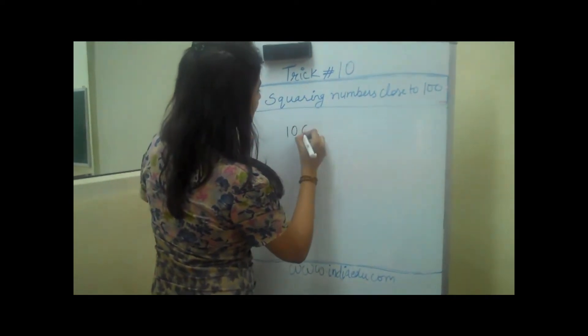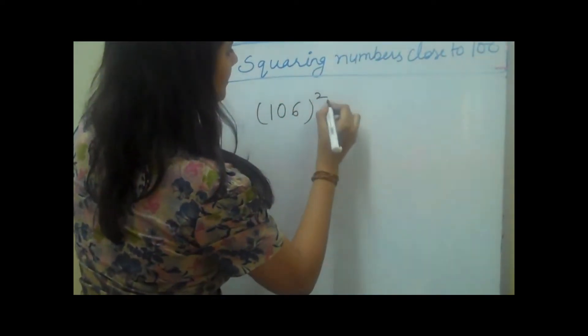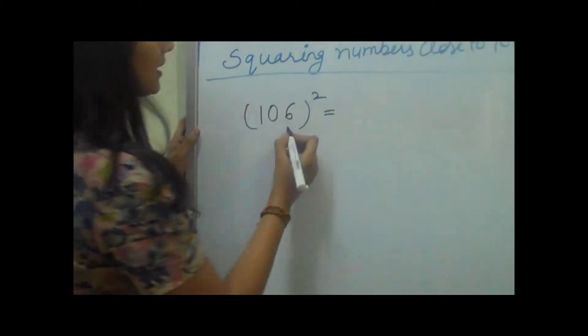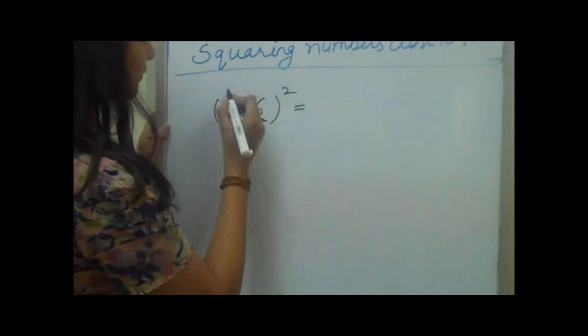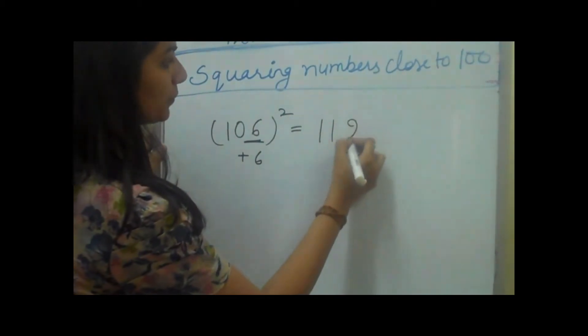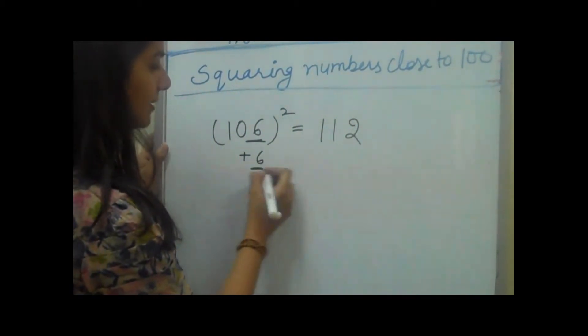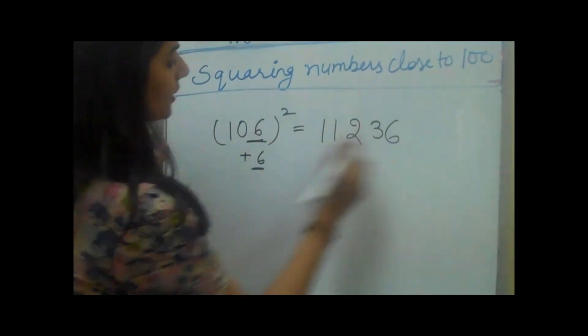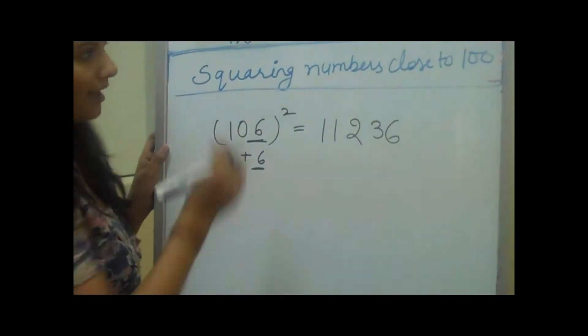If we have 106 and we want to square it, it's very simple. Since we see there is a 6, we will add 6 in this digit which makes 112. And then we will square this number which is 36. 6 squared is 36. That is the answer.